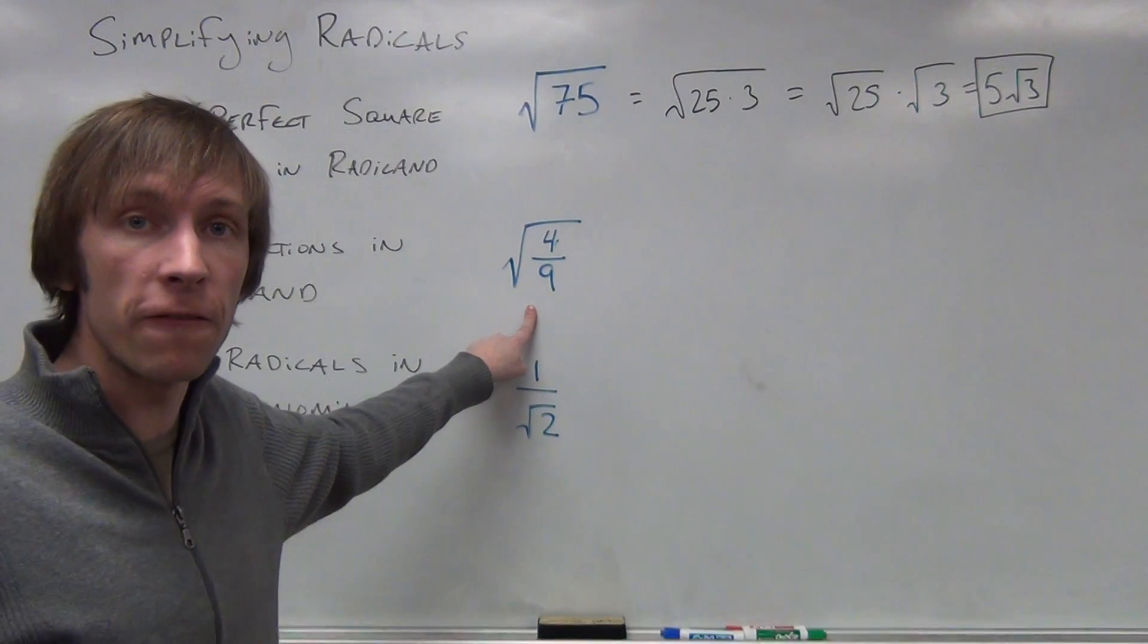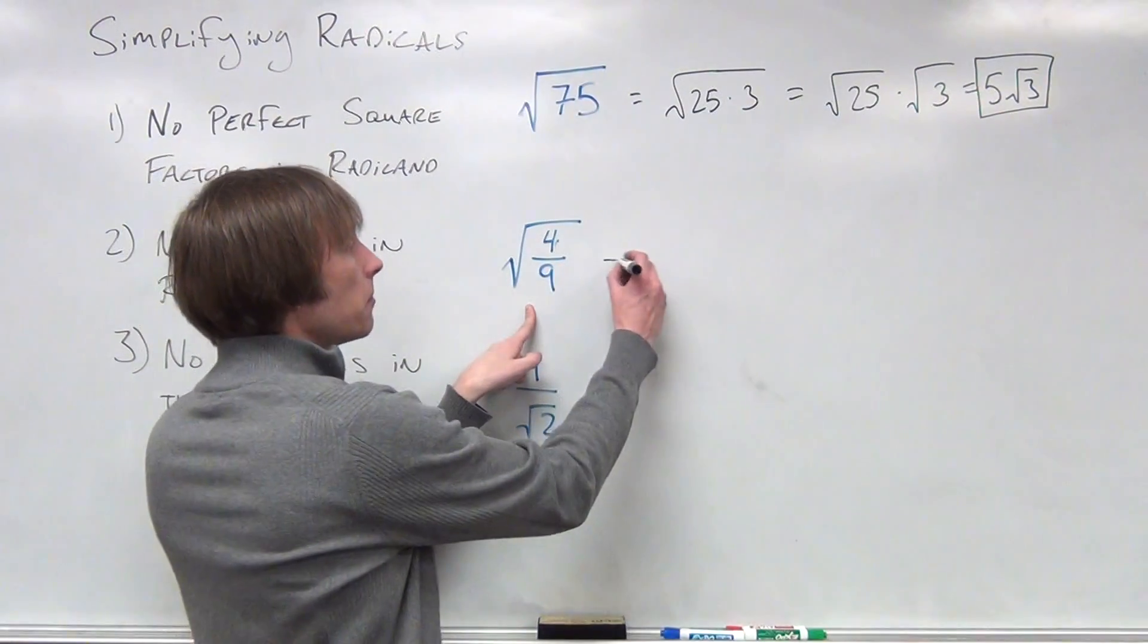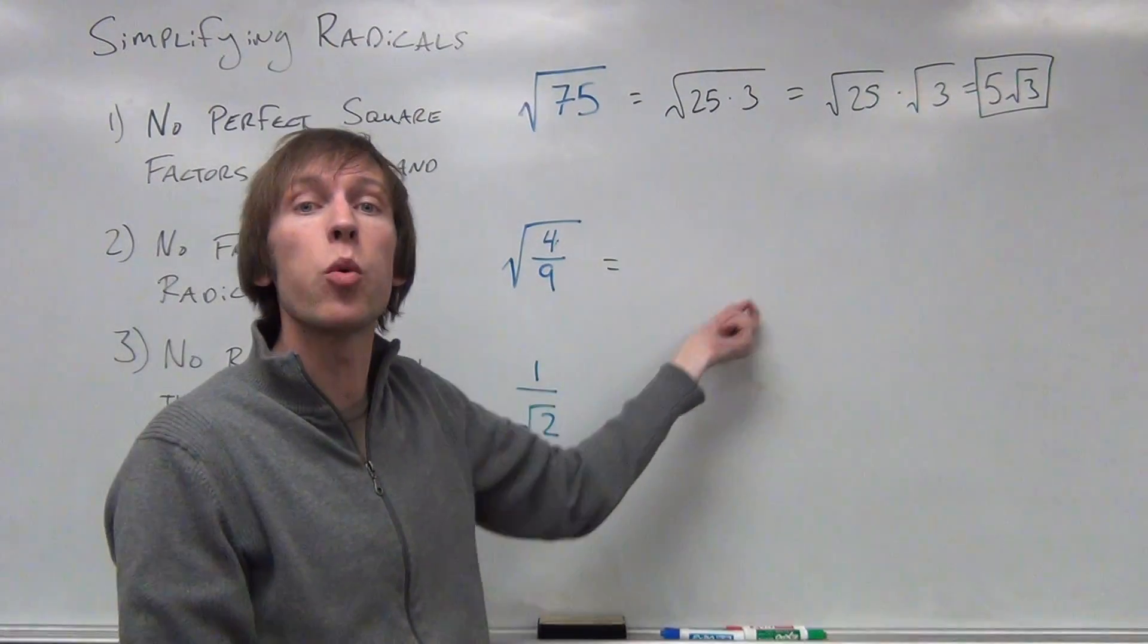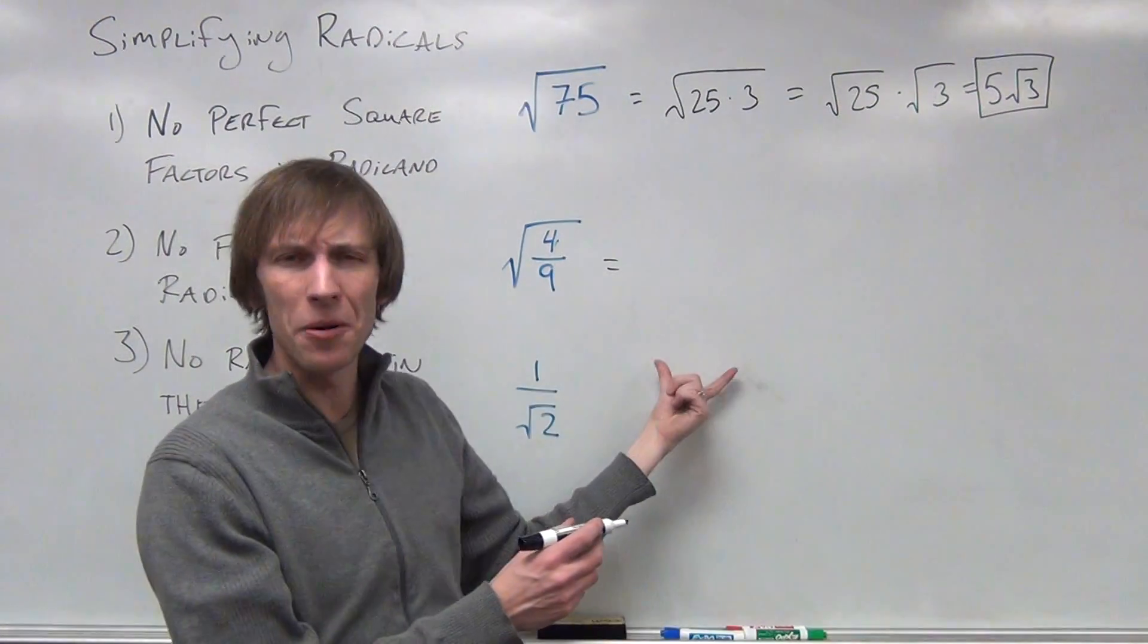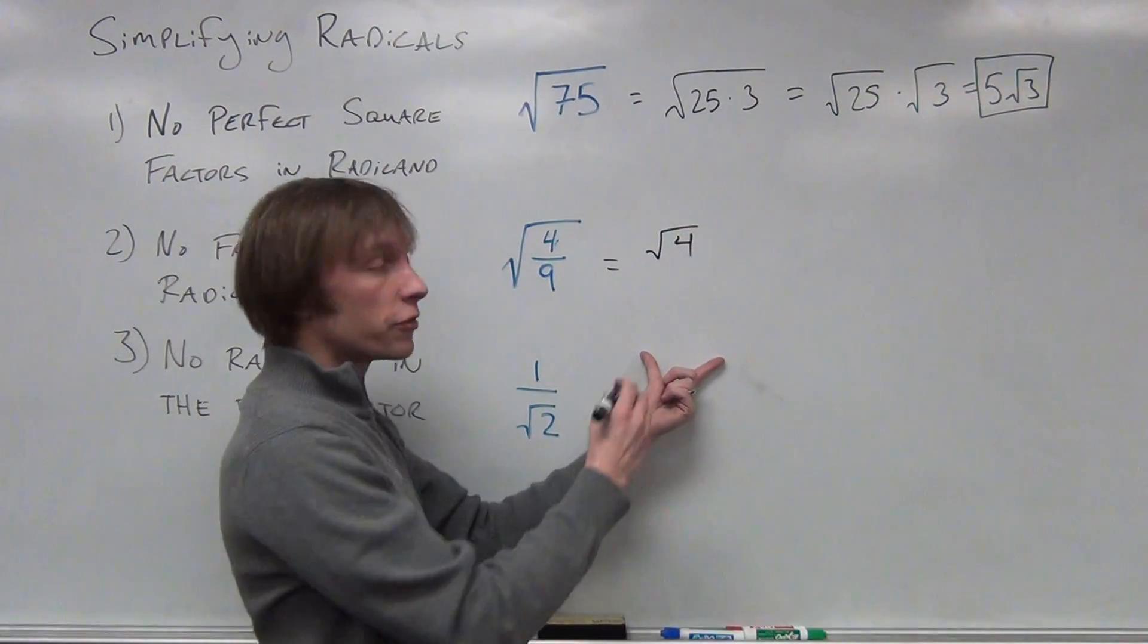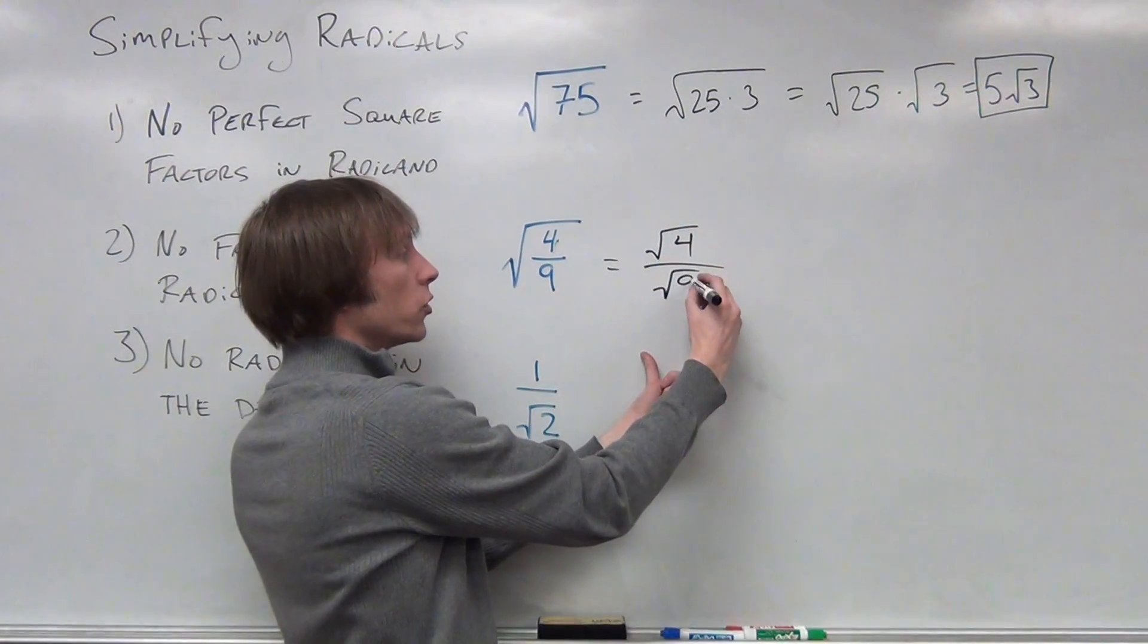Oh no, we've got the square root of 4 ninths here. Well, I can break this down just like there's a product property of radicals, there's a quotient property of radicals. So this can be rewritten as the square root of 4 over the square root of 9.